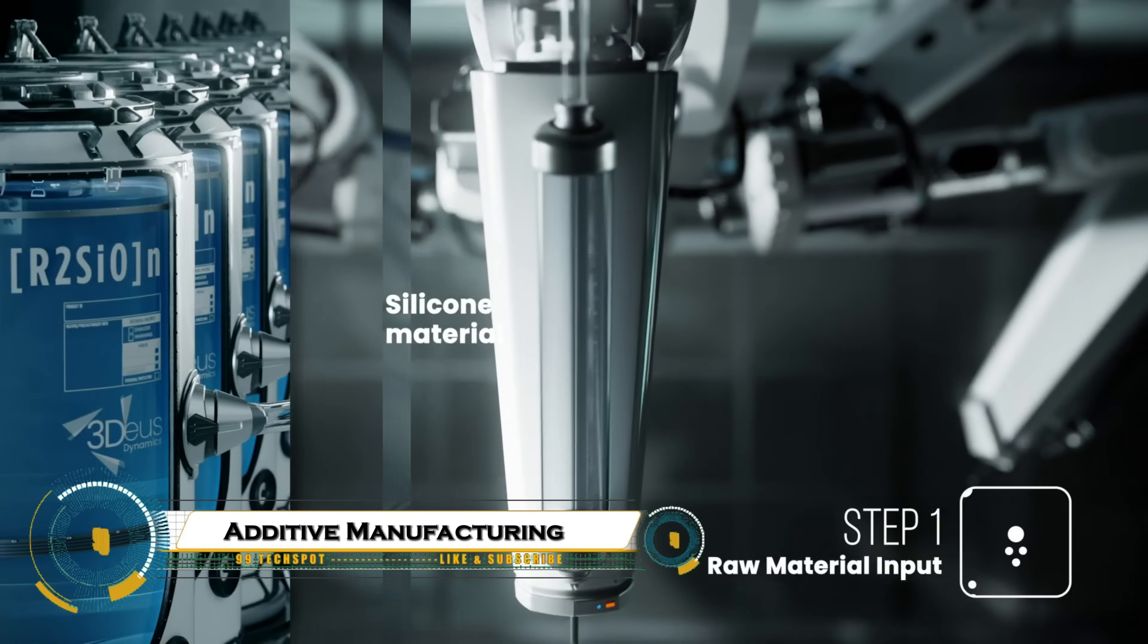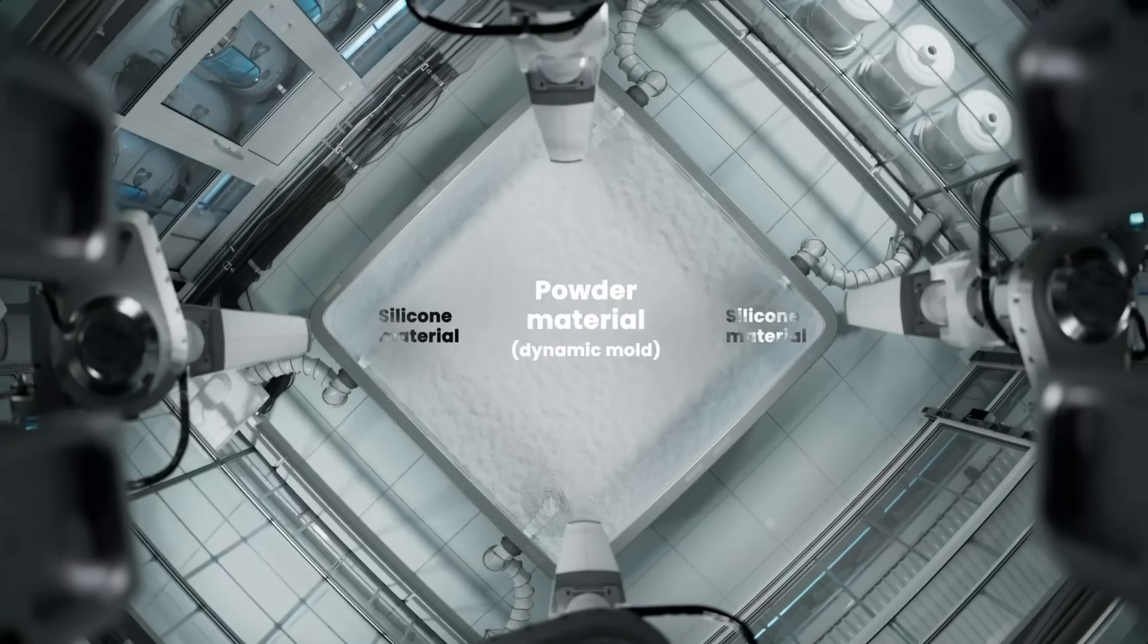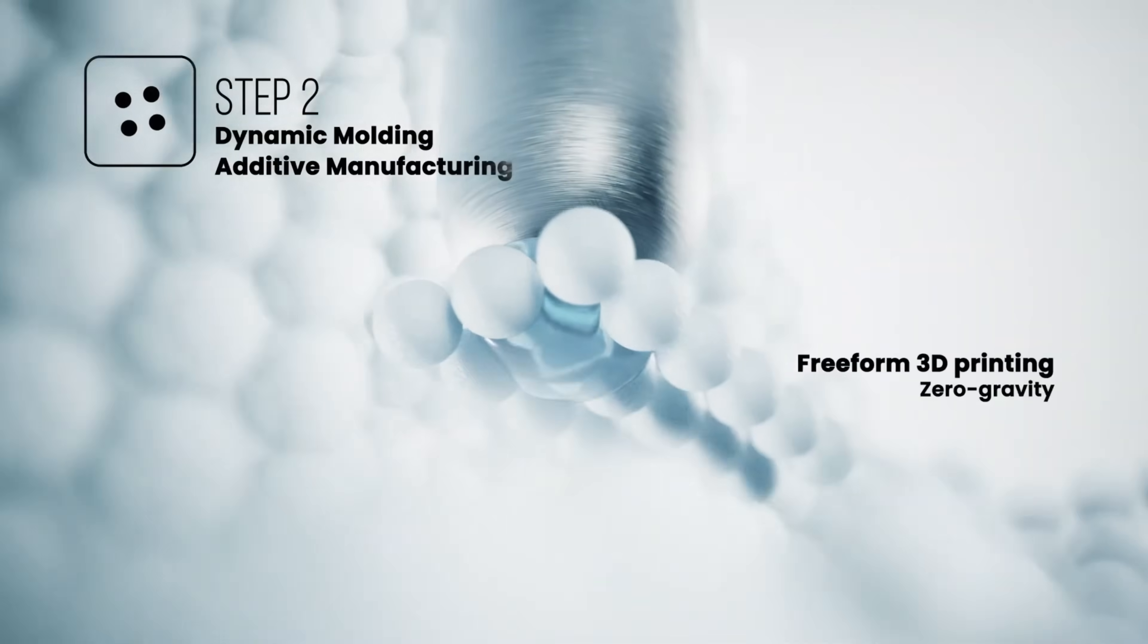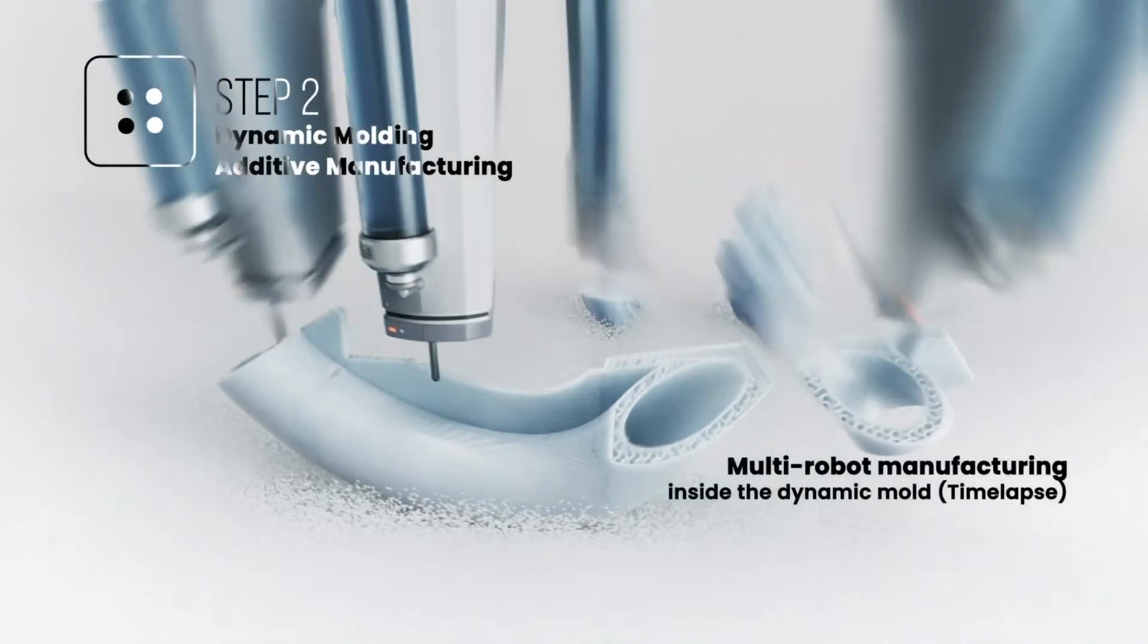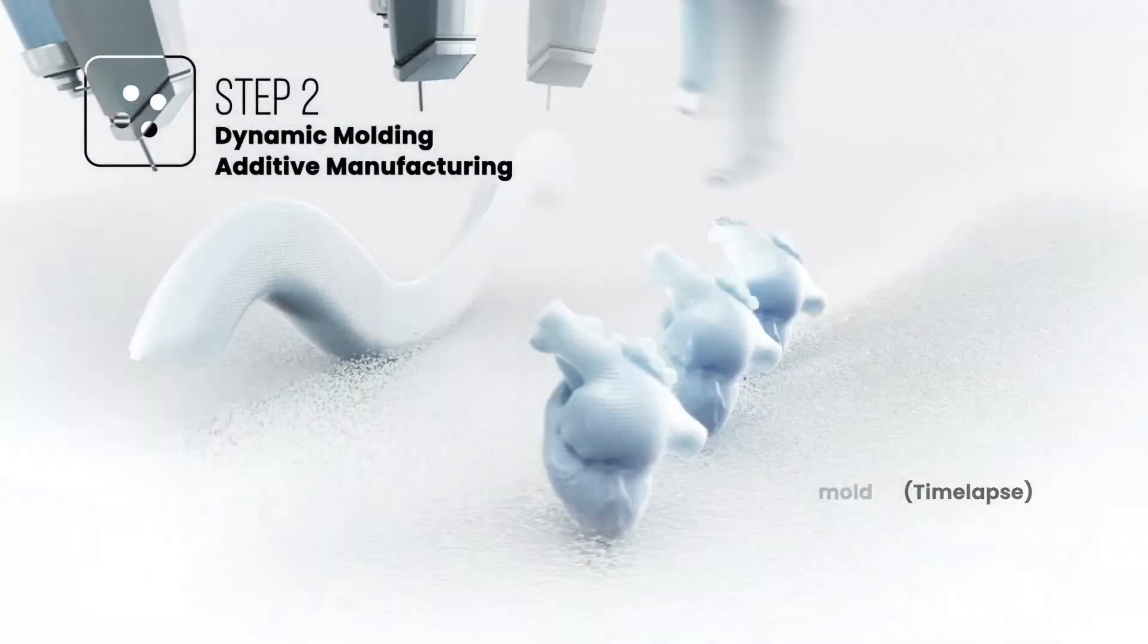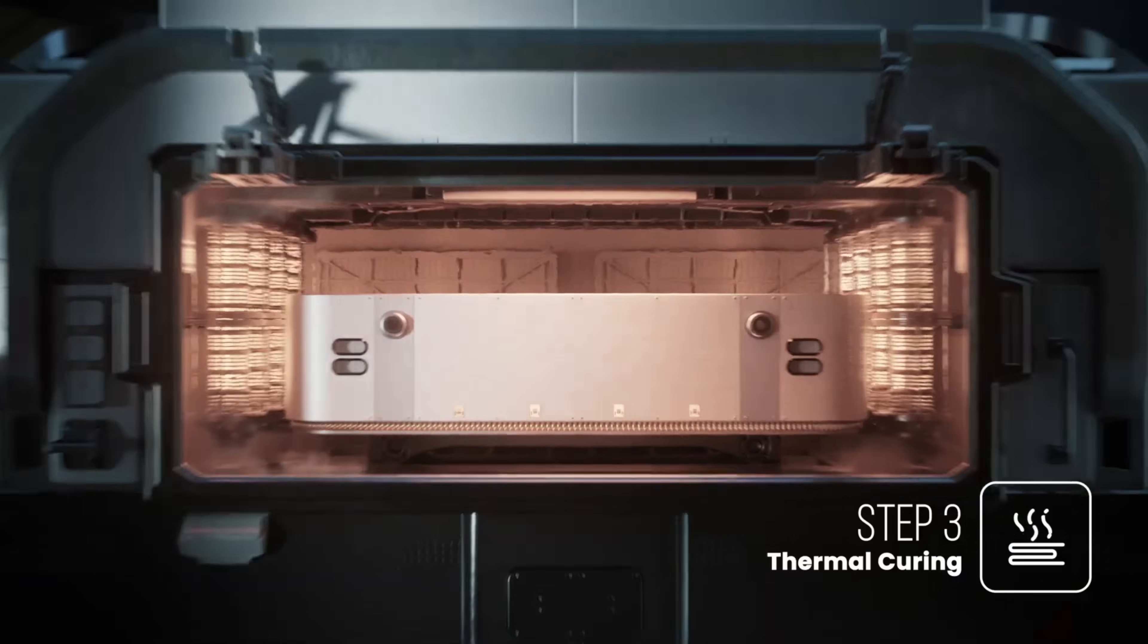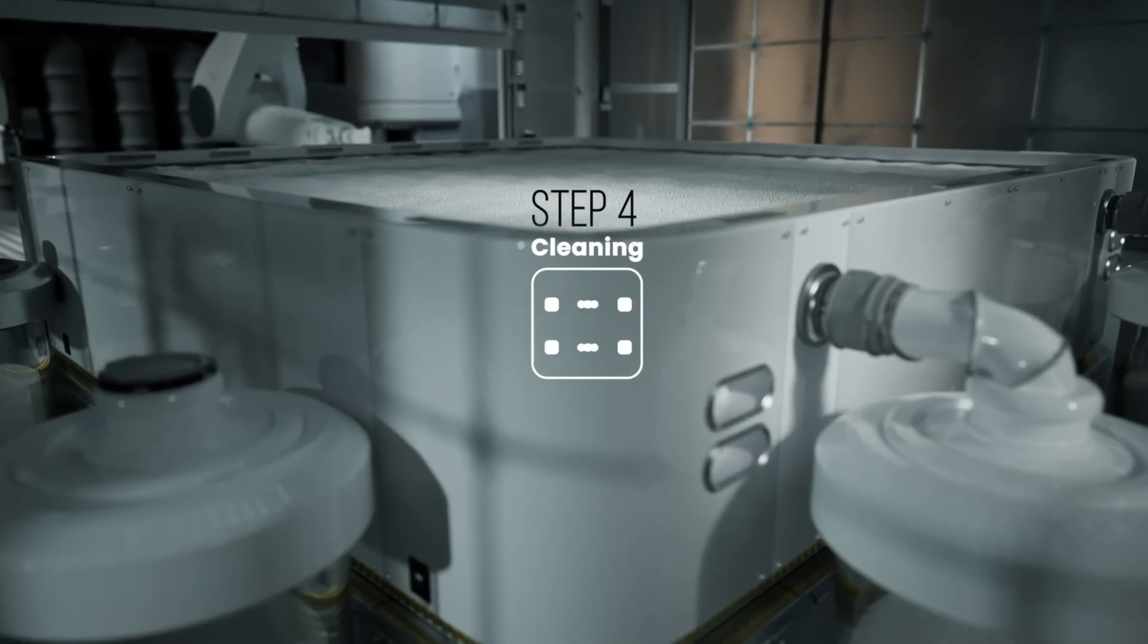Dynamic Molding is an innovative additive manufacturing process developed by 3D Deus Dynamics that blends the best of 3D printing and molding technologies. It uses a controlled, granular phase as a dynamic mold, allowing precise shaping of materials like silicones and elastomers with great accuracy and minimal waste.